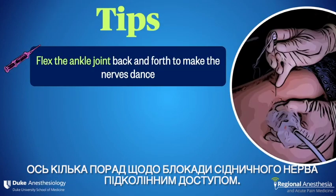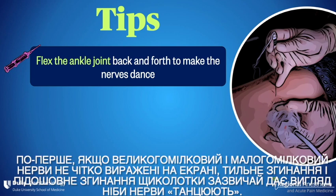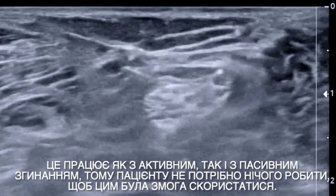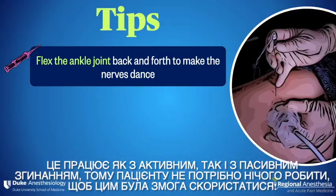Here are some tips for popliteal sciatic nerve block. First, if the tibial and peroneal nerves are not well defined on the screen, dorsiflexing and plantarflexing the ankle usually makes the nerves appear to dance. This works well with both active and passive flexion, so the patient doesn't have to be cooperative to take advantage of this.